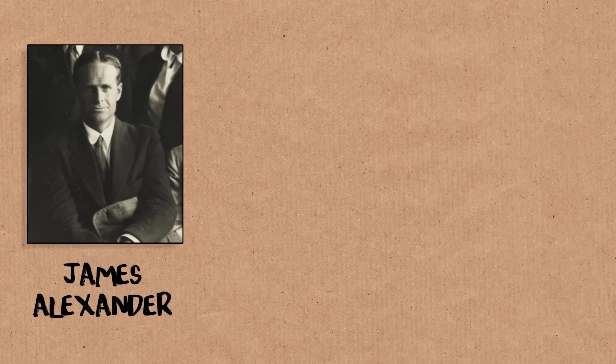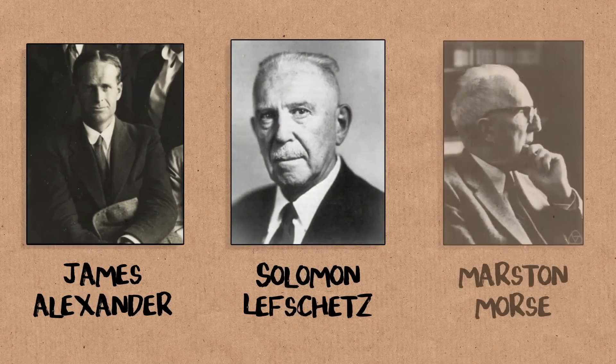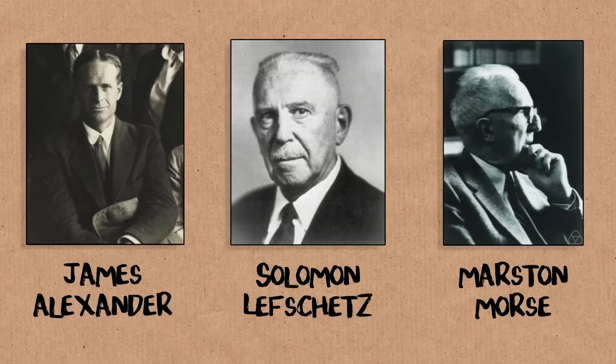Do you know why it's called the Alexander polynomial? Yes, it was named after a mathematician at Princeton named Alexander. I'm old enough to have known a lot of the early topologists — I knew Lefschetz, I knew Morse. Alexander I did not know; he was sort of a recluse in his old age. He was a descendant of a family — I think there's an Alexander on the Declaration of Independence, an old New Jersey family — and he discovered this polynomial invariant, must have been around the 1920s.